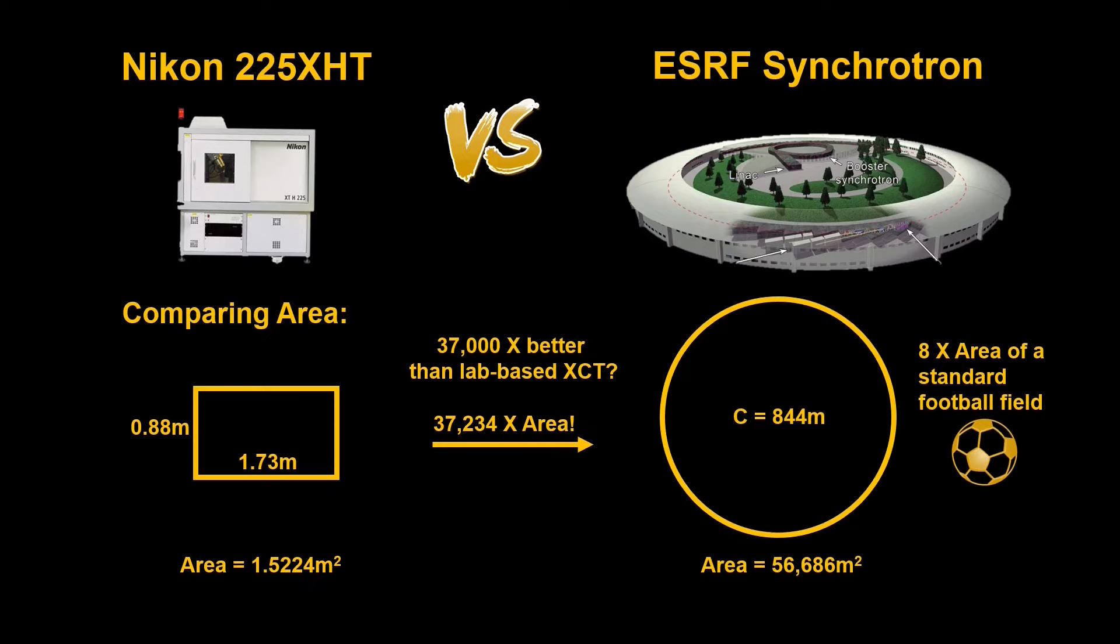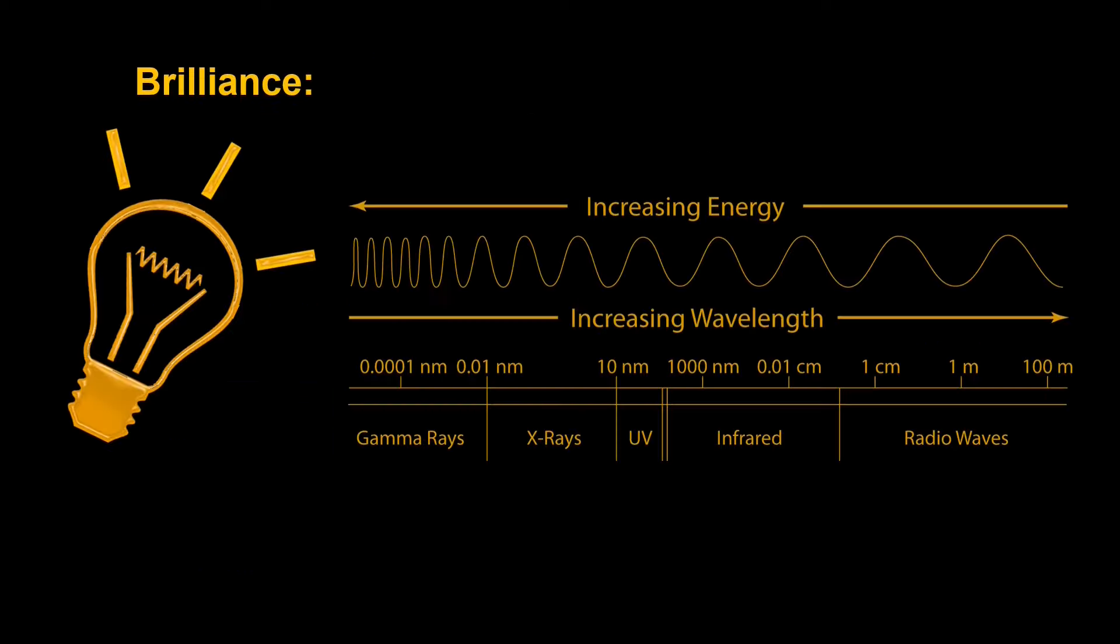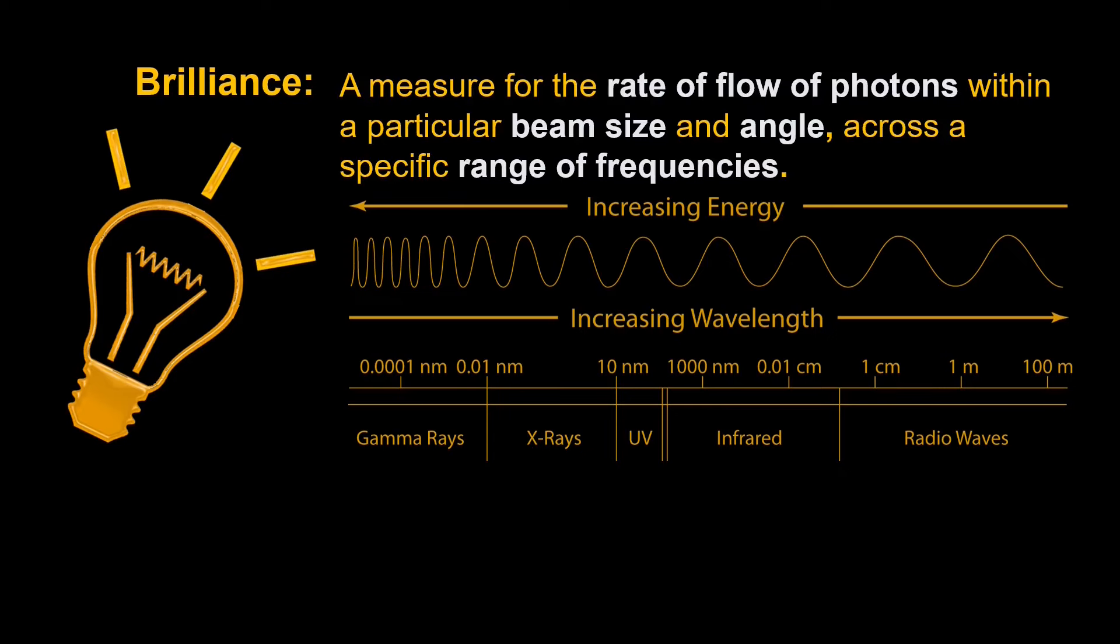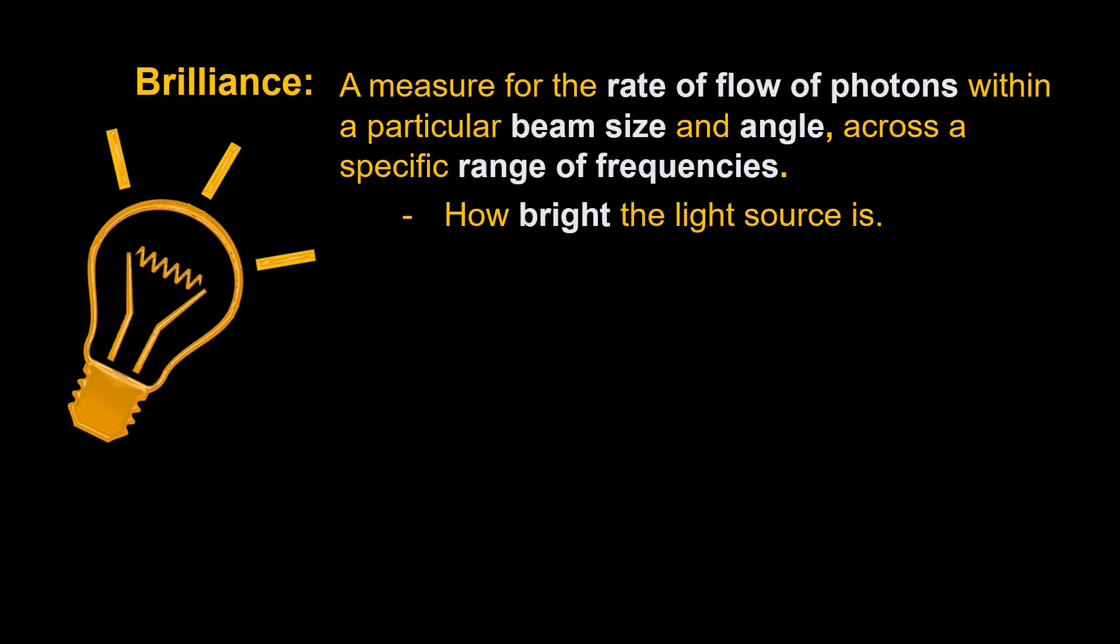So what if we treated them both as a light source? Because as we know, X-rays are just another form of electromagnetic radiation or light. To compare them as light sources we can look at their brilliance, which is defined here as a measure of the rate of flow of photons within a particular beam size and angle across a specific range of frequencies or bandwidth. This is basically how bright the light source is and this can be helpful when comparing different sources of light like the Nikon and the ESRF synchrotron.